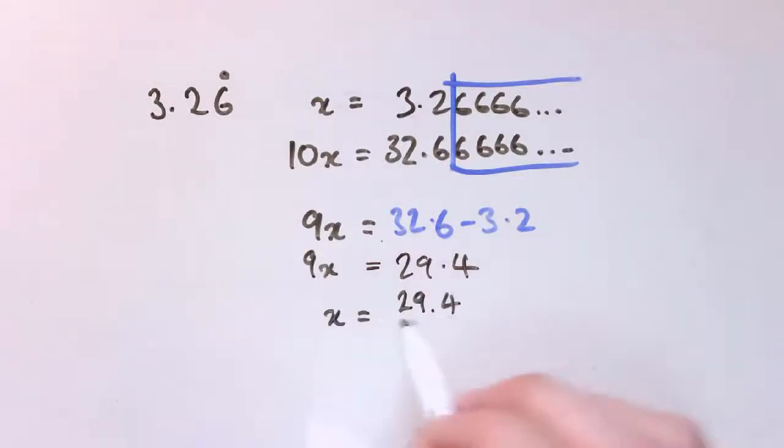I just need to do 32.6 minus 3.2, and 32.6 minus 3.2 gives you 29.4. So the answer here is that x equals, that's 9x, so x equals 29.4 over 9, and I wouldn't leave it as a decimal inside a fraction, so that's 294 over 90.